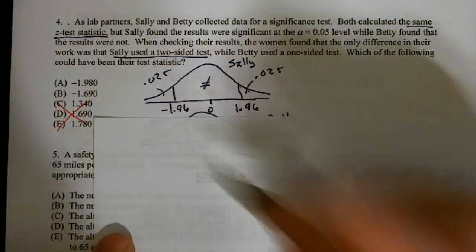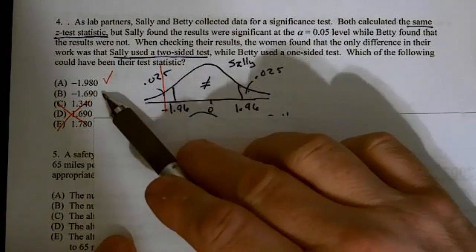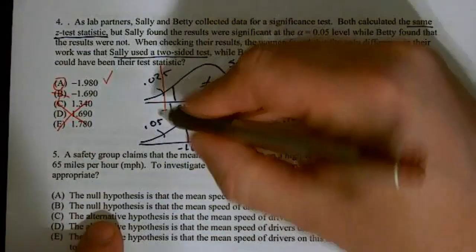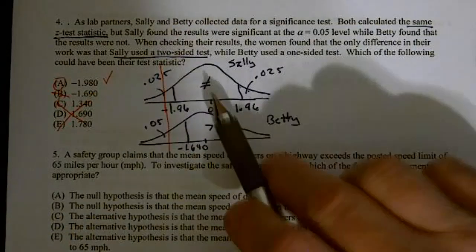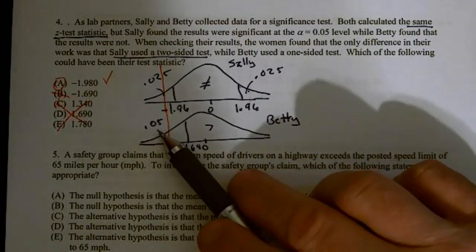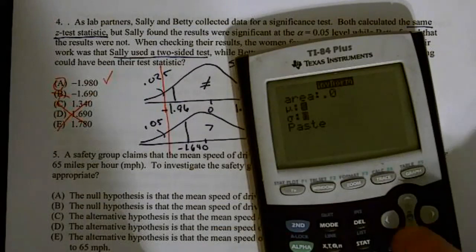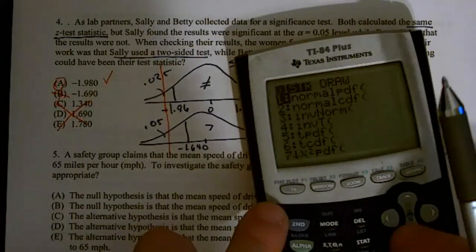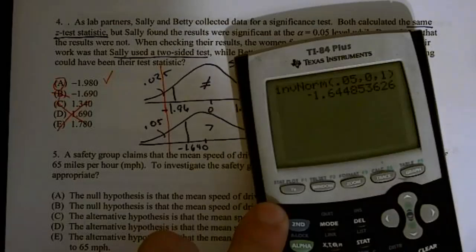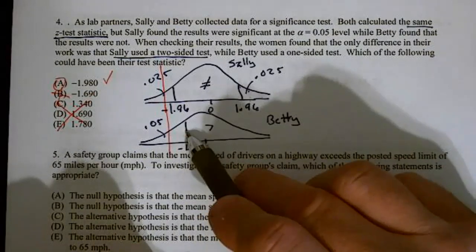On the lower end, negative 1.98. Well guess what, that's in the rejection zone. But negative 1.69 is not. So the only possible answer at this point is A. So we know the answer to 4 is A. But why didn't that work for Betty, who ran a one-tail test and got the exact same statistic? So maybe she still got a negative 1.98. We know that her area is larger at 0.05.